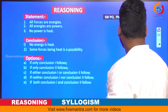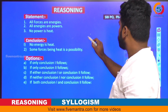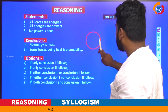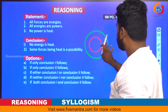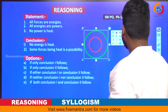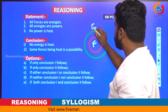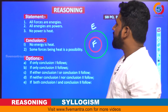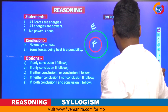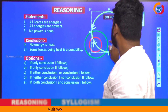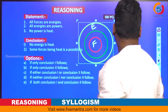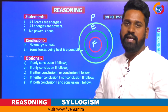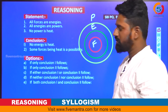Let us draw the Venn diagram. The first statement, all forces are energies, means forces belong inside the energies circle. For the second statement, all energies are powers, we take one more circle representing powers containing energies. For the last statement, no power is heat, there is no relation between power and heat.